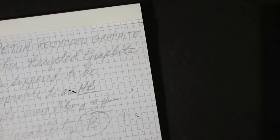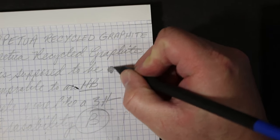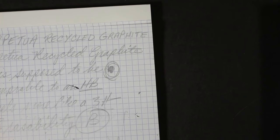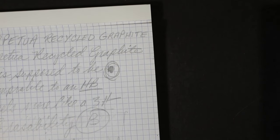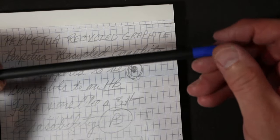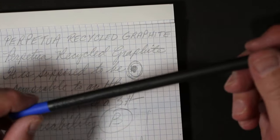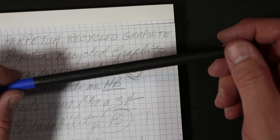It's still light. Yeah. So there it is, there it is. The Perpetua, all recycled graphite made in Italy pencil.